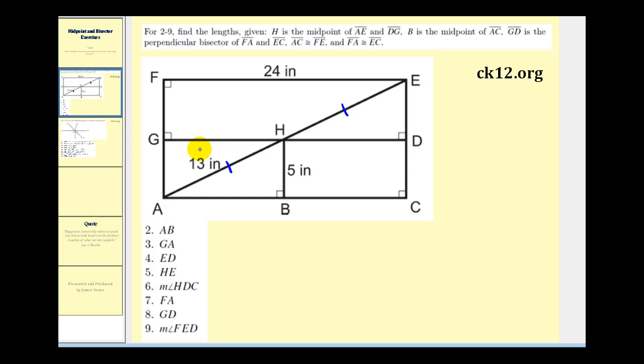And H is also the midpoint of segment GD, so GH is equal to HD. Next we're also told that B is the midpoint of AC. Well here's segment AC, so if B is the midpoint, then segment AB is the same length as segment BC.